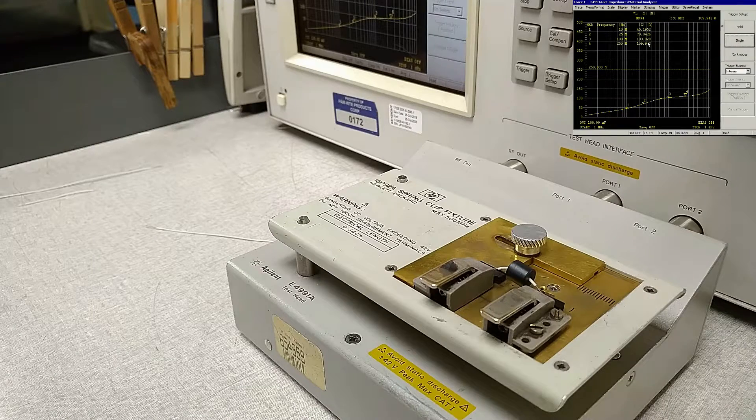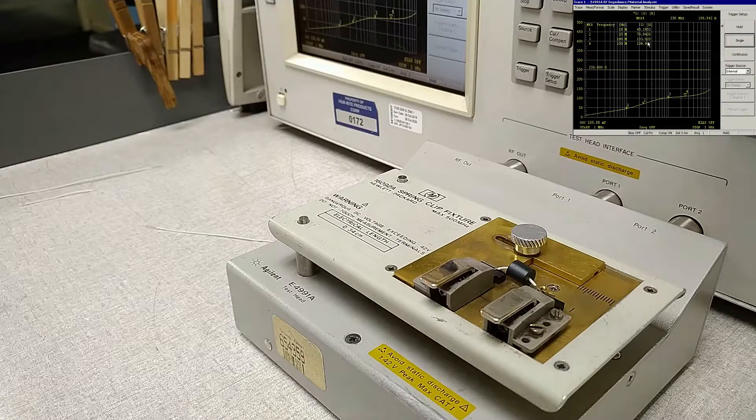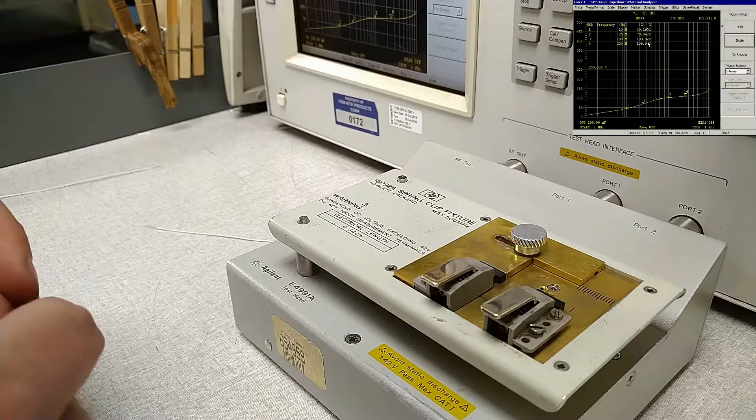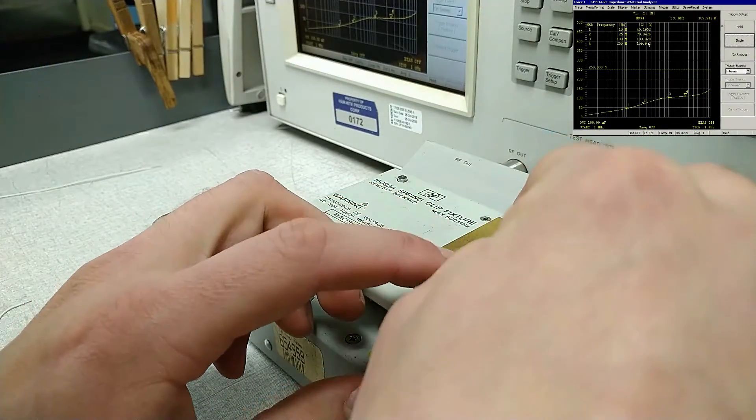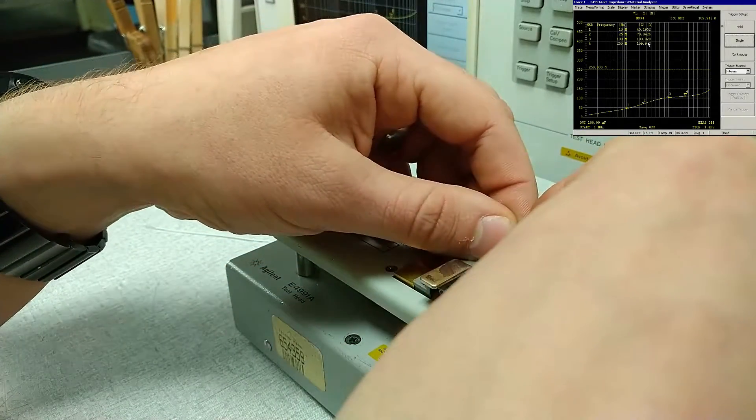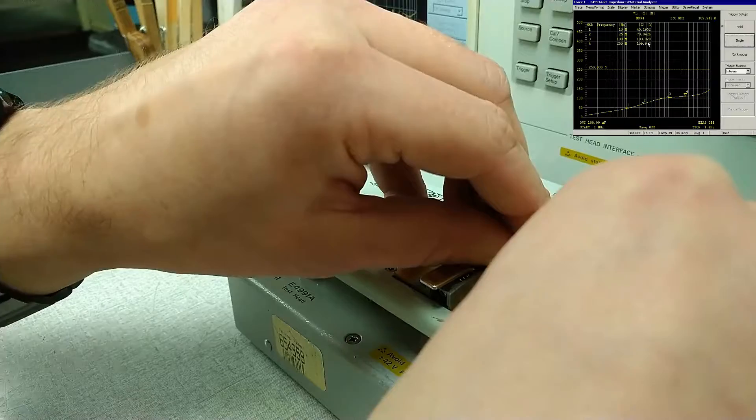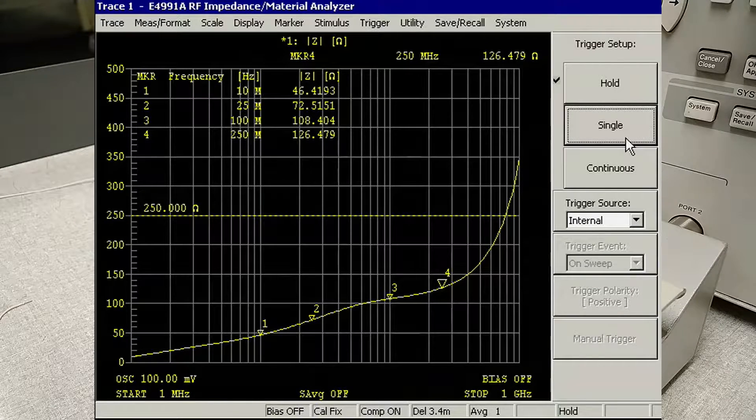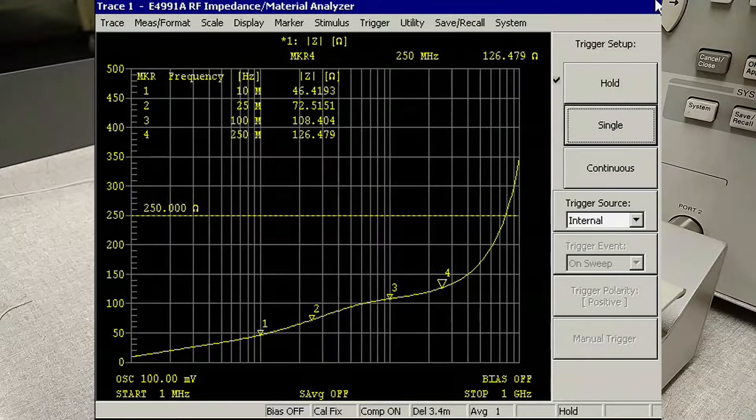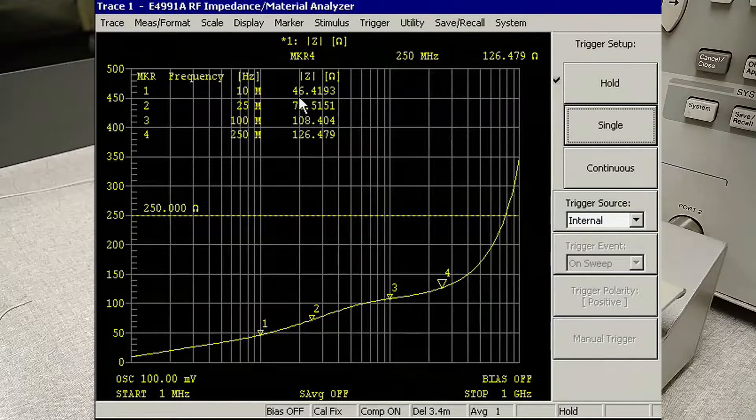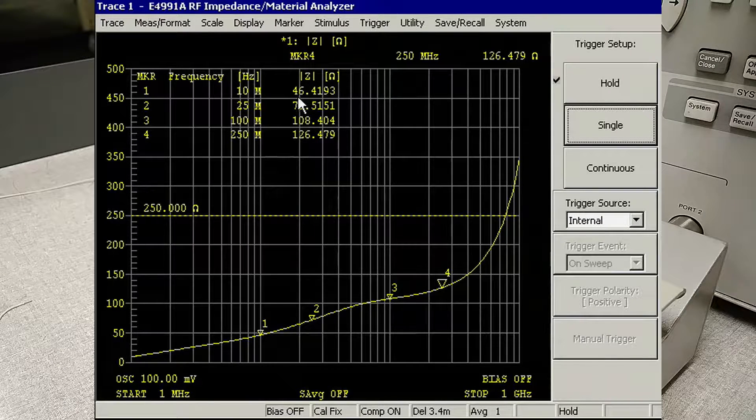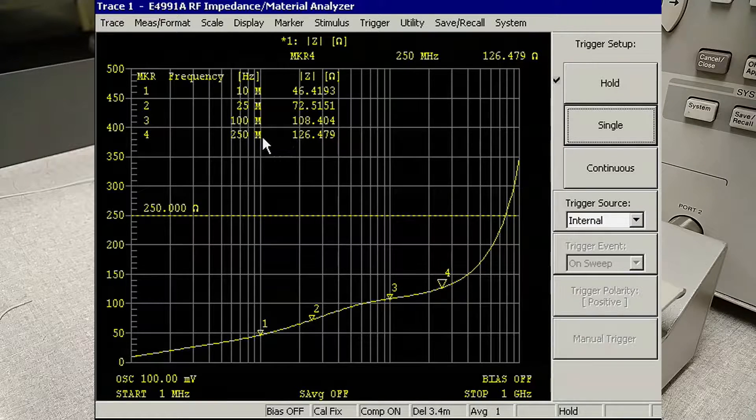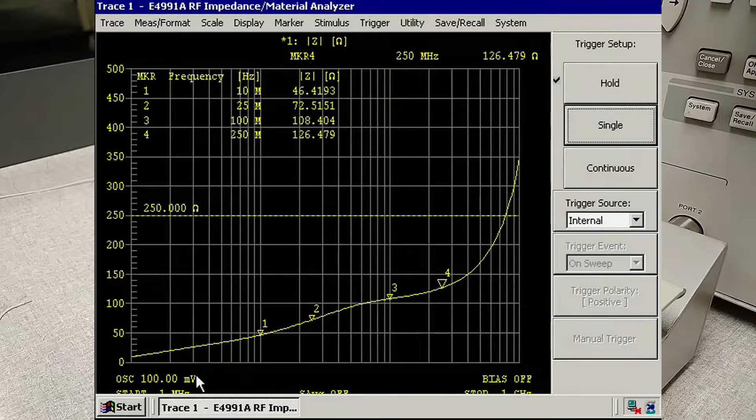So now for comparison, let's see what happens when we increase the wire length to 51 millimeters. We'll connect our part and trigger a sweep. The 10 megahertz and 25 megahertz values haven't really changed very much. The 100 megahertz value has gone up by a few ohms and our 250 megahertz value has jumped by almost 20 ohms.